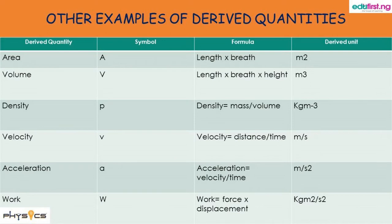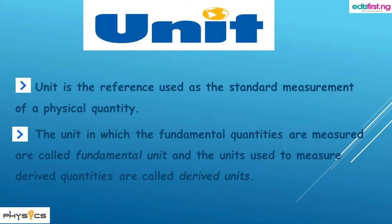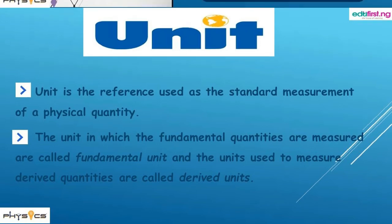So let's move on to units. A unit is the reference used as the standard measurement of a physical quantity. The units in which fundamental quantities are measured are called fundamental units, and the units used to measure derived quantities are called derived units. So for every fundamental quantity we have fundamental units, and for every derived quantity we have derived units.